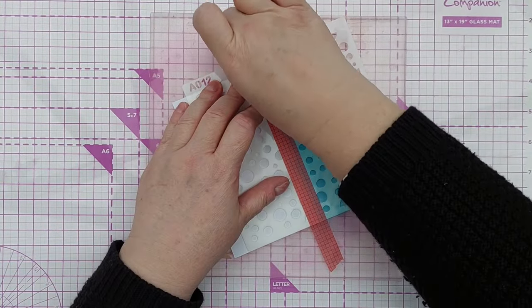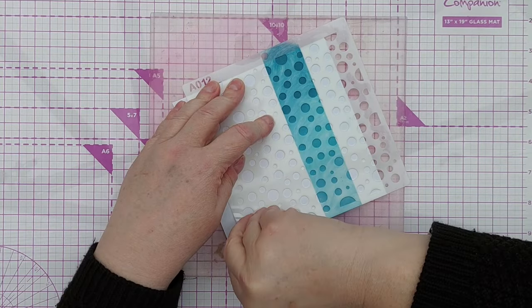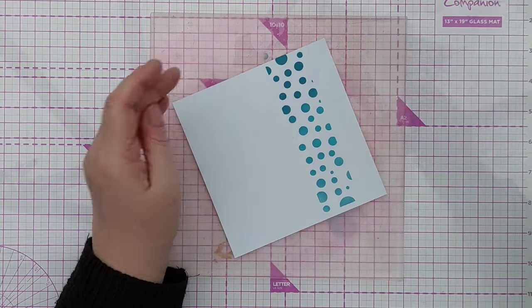Once that was all nicely blended, I peeled off my washi tape, removed my stencil, and there you can see my little ombre strip of bluey circles.